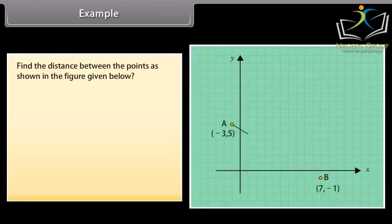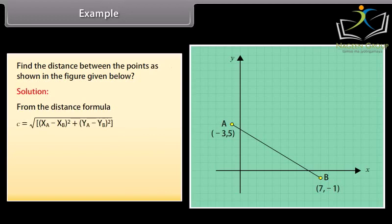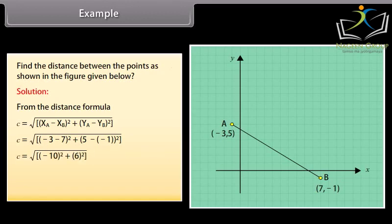Example. Find the distance between the points as shown in the figure given below. Solution. From the distance formula, c is equal to under root of xa minus xb whole square plus ya minus yb whole square. c is equal to under root of minus 3 minus 7 whole square plus 5 minus minus 1 whole square. c is equal to under root of minus 10 whole square plus 6 whole square. c equals under root of 100 plus 36. c is equal to 11.66.